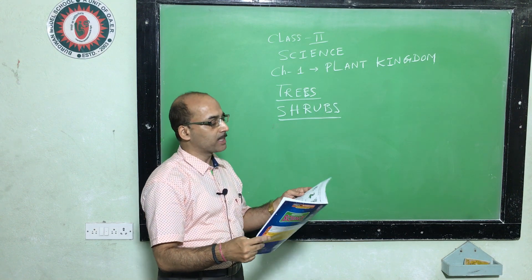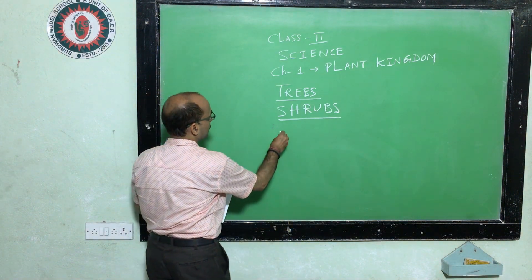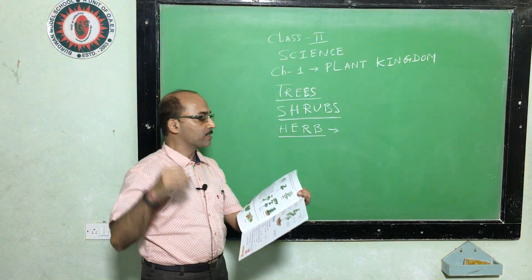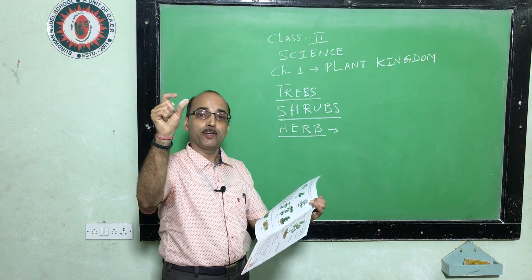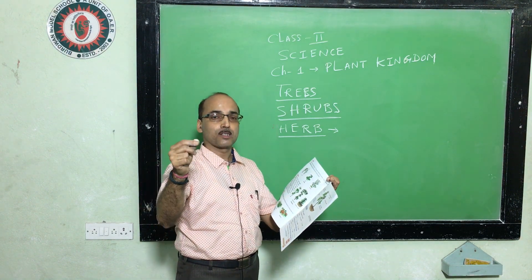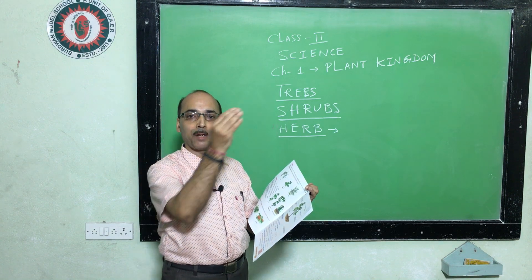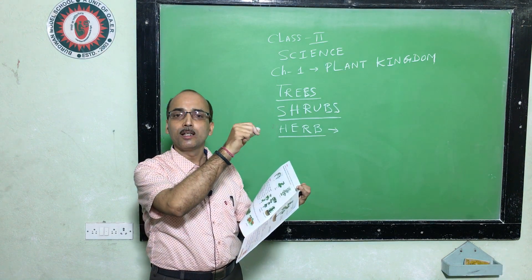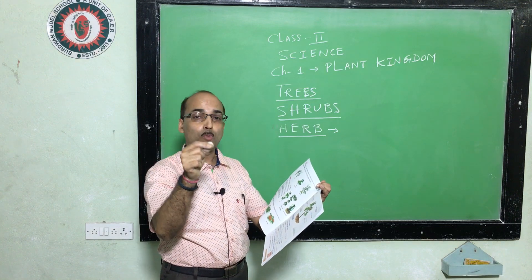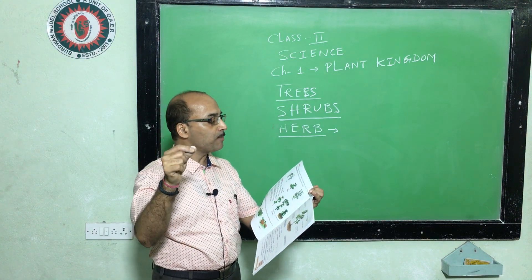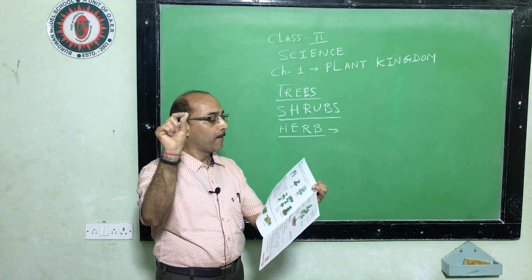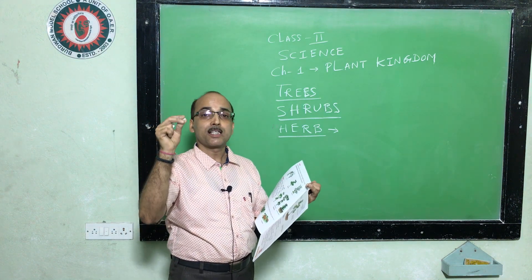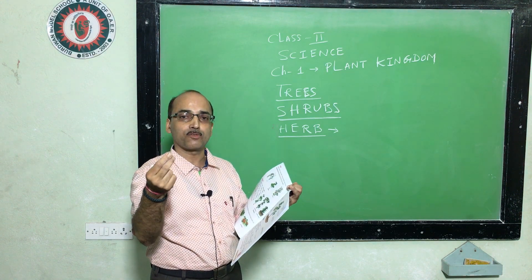Turn to the next page, page number 6. Next is herbs. Herbs are very small plants — smaller than shrubs. So we have trees, which are the biggest; shrubs of medium height; and herbs, which are smaller than shrubs. Their stems are thin and soft. Most herbs live only for a few months, whereas shrubs live for a few years.